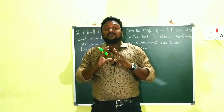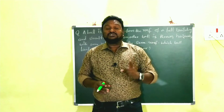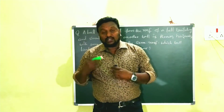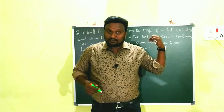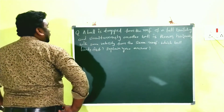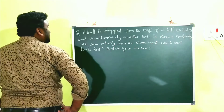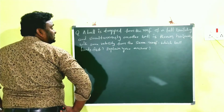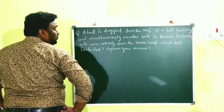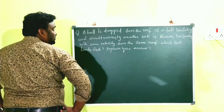This is a very important problem — I think this is the seventh short answer question in your textbook according to the syllabus. The problem is written on the board for us. A ball is dropped from the roof of a tall building and simultaneously another ball is thrown horizontally with some velocity from the same roof.